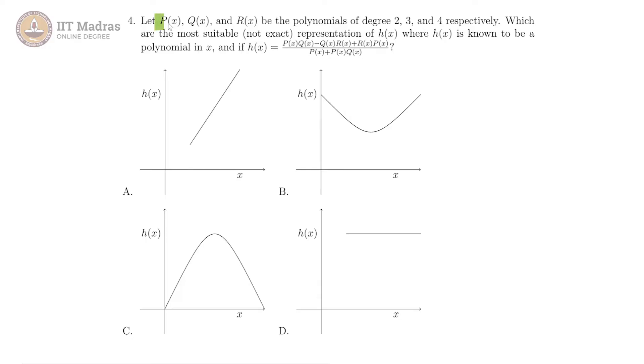In this question, we have 3 polynomials p of x, q of x and r of x and the degrees are given to be 2, 3 and 4 respectively.